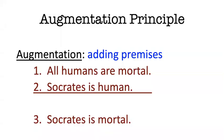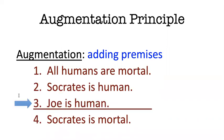Hi folks. This video is about the augmentation principle. Augmentation is a thing we do to arguments. So when we take an argument with some premises and a conclusion — like consider this argument here: all humans are mortal, Socrates is human, therefore Socrates is mortal — if we take that argument and add more premises to it but leave all the rest intact, then that's called augmenting the argument.